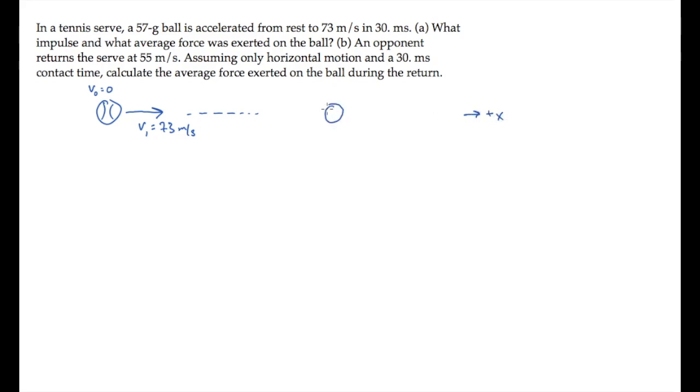Where sometime later it's returned, so it comes in at the same speed v1 and is returned back the opposite direction at speed v2 of 55 meters per second. Part A asks us to find the impulse and average force exerted on the ball during the serve.